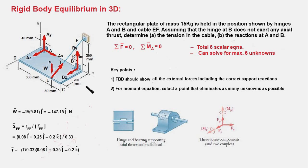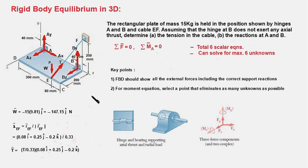Here is the free body diagram of the rectangular plate. There are two key points to note. First, the FBD should show all the external forces including the correct support reactions. There are three reactions at hinge A and only two reaction forces at hinge B. To figure out the number of reaction forces and couples acting at the hinges, you can always refer to your textbook — all standard textbooks provide a table listing the different kinds of supports and associated reaction forces and couples.